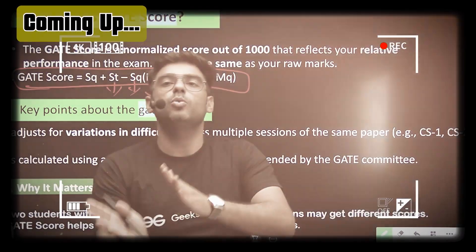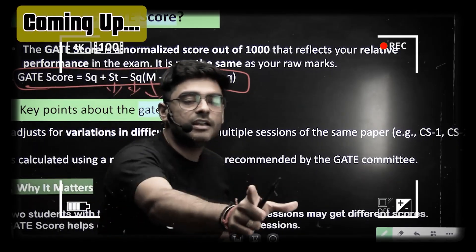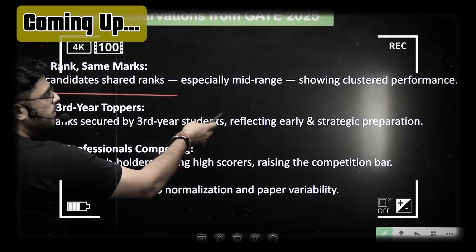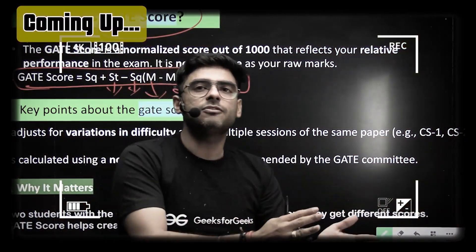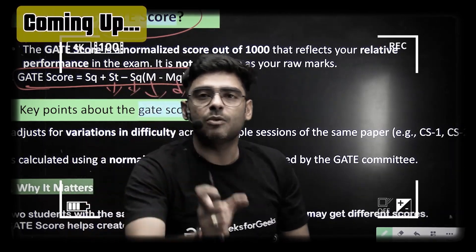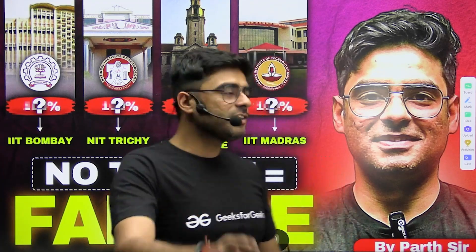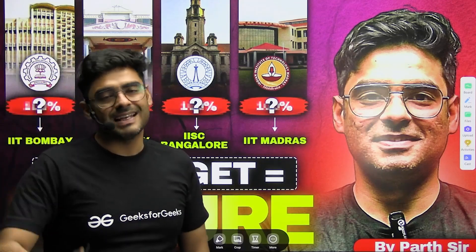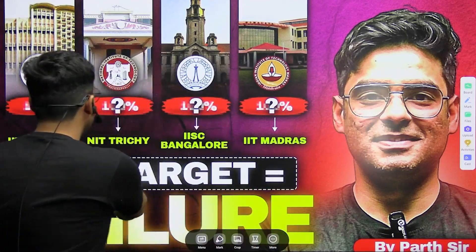Gate score versus marks versus rank — who has got rank one? Gate would be giving a score. Today I would be presenting on this topic: no target equals to failure. If you do not have a target, you are failing day by day, so please set a target. Today I'll be discussing these three important terms: gate score versus marks versus rank.